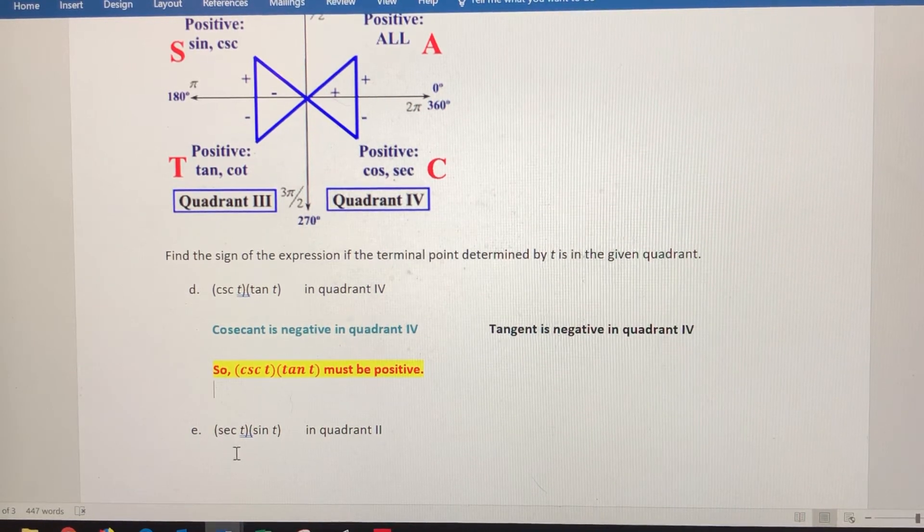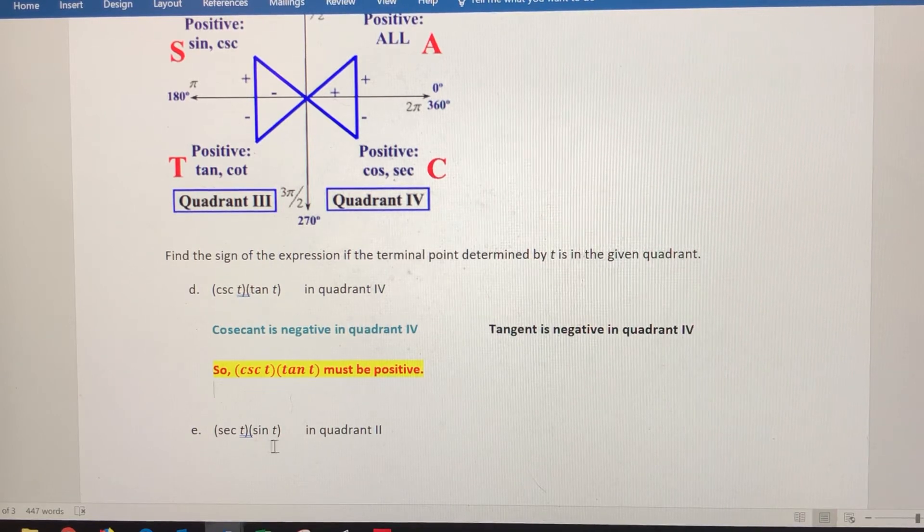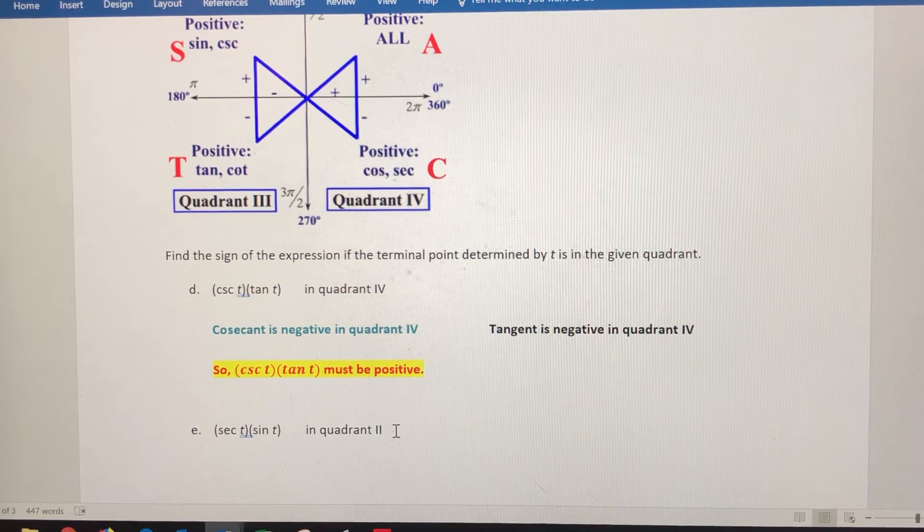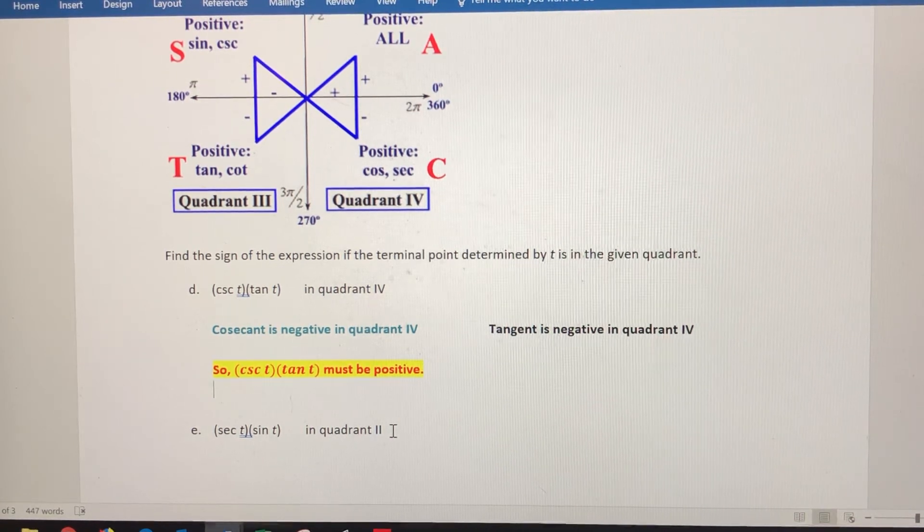Let's do one more example. Secant of t times sine of t. We'll get a product again. We know t and the terminal point associated with t lie in quadrant two.